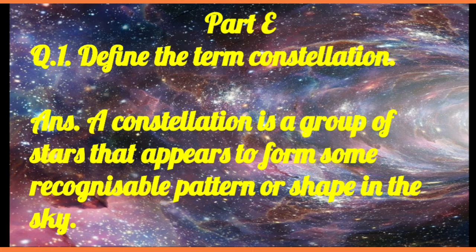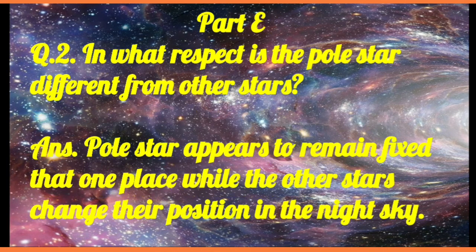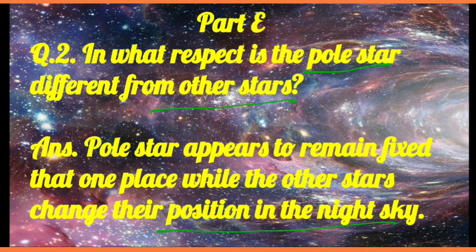Part E: define the term constellation. A constellation is a group of stars that appear to form some recognizable pattern or shape. In what respect is the Pole Star different from other stars? The Pole Star's position is approximately fixed with respect to other stars — there is only a slight change in its position in the night sky — because it lies on the axis of rotation of the Earth.